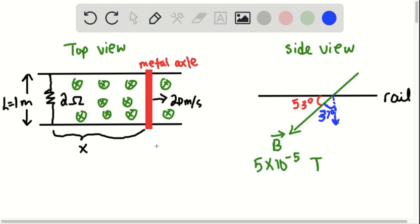And within this whole setup, you have the Earth's magnetic field going through this area enclosed by the setup, and it is going down at an angle of 53 degrees below the horizontal.